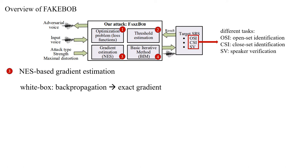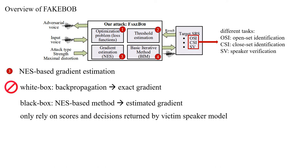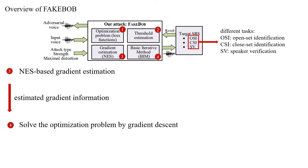In white-box attack, the attacker usually uses backpropagation to obtain the exact gradient, which is then used to solve the optimization problem. However, backpropagation is not available in black-box attack because the attacker has no information about model structures or parameters. So here, we use a natural evolution strategy-based gradient estimation method to estimate gradients instead of using the exact gradient. This method only relies on scores and decisions returned by the victim speaker model when we query it. This allows us to achieve black-box attack. After we obtain the estimated gradient information, we can use it to solve the optimization problem by gradient descent, and finally obtain the adversarial voices.